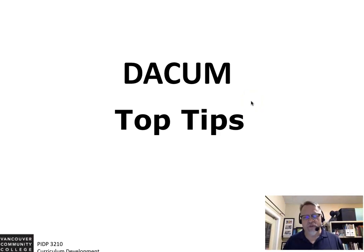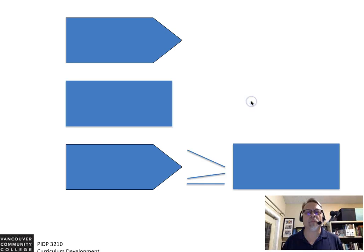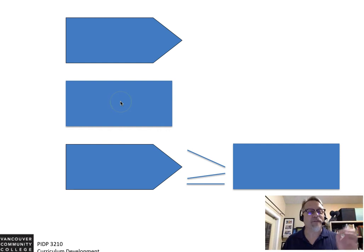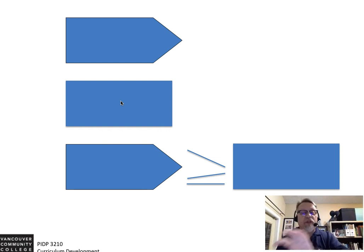Consider the following top tips or best practices as you work on your Dacum. A goal is a general statement about what a learner can do, whereas an objective is a specific statement about what a learner can do, and your objectives lead into your goal.